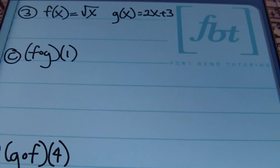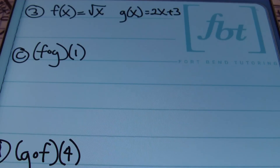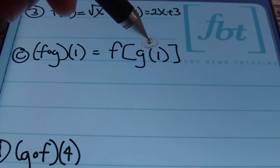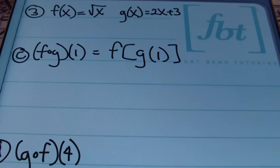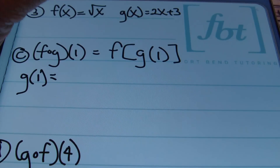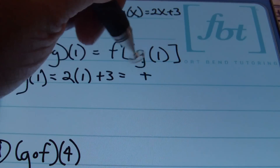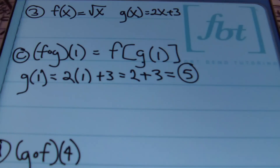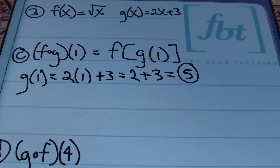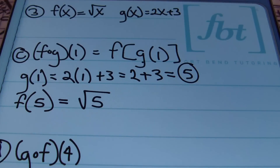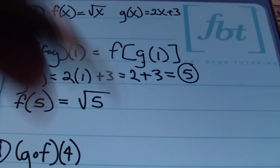In part C, using the same F and G functions, we're asked to find F composite G of 1, meaning F of G of 1. Plug 1 into G first: replacing X with 1, we get 2 times 1 plus 3, which equals 2 plus 3, which equals 5. So G of 1 equals 5. Taking that result, we plug it into F — we want F of 5. Plugging 5 into F gives the square root of 5, which is the answer.